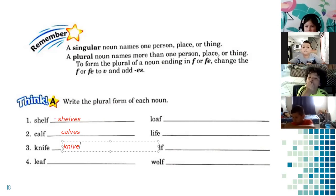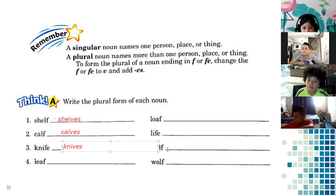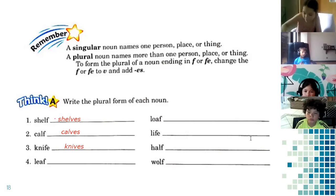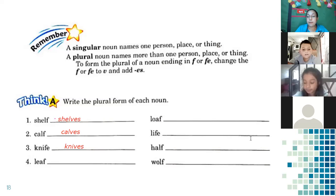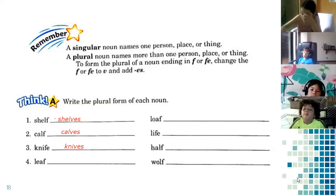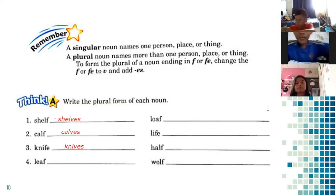Knives. Excellent, Julio. So K-N-I-V-E-S — knives. You drop the F and change it to V, then add ES. Lucas Marroquin, what is the plural form of leaf? Leaves. Excellent — leaf becomes leaves.